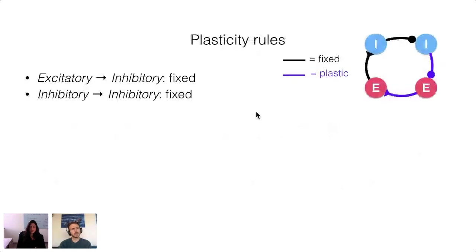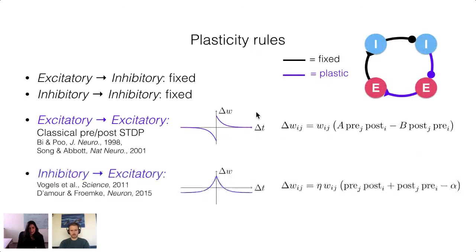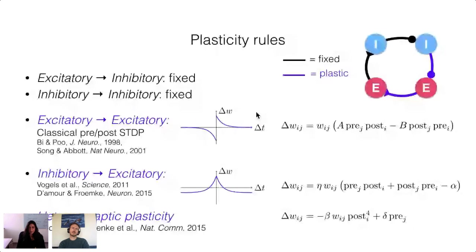We focused on excitatory-to-excitatory and inhibitory-to-excitatory plasticity as motivated by the experimental literature. For E-to-E, we use a classical pairwise STDP rule: LTP occurs when post-synaptic spikes follow pre-synaptic spikes, and LTD occurs when post-synaptic spikes precede pre-synaptic spikes. Our I-to-E mechanism is based on Vogels et al. and D'Amour and Froemke et al. — synapses are strengthened when pre- and post-synaptic cells fire synchronously and weakened when they fire asynchronously regardless of order. We also included two local non-Hebbian plasticity mechanisms modified from Zenke and Gerstner, operating on the same timescale as STDP: heterosynaptic depression preventing any single weight on a post-synaptic cell from dominating, combined with a mechanism to boost weights that have become too weak.